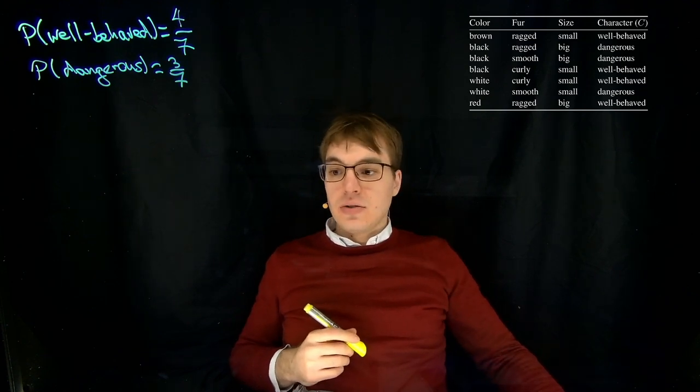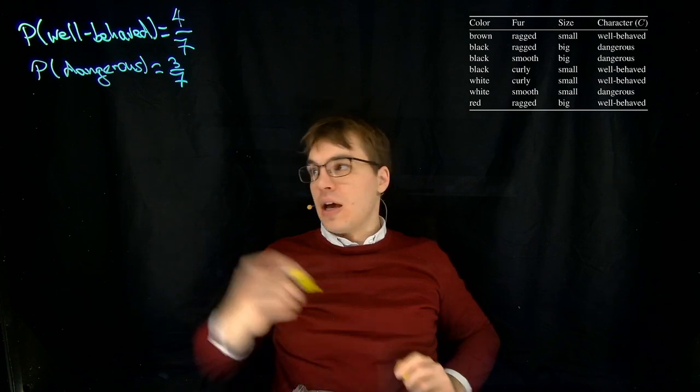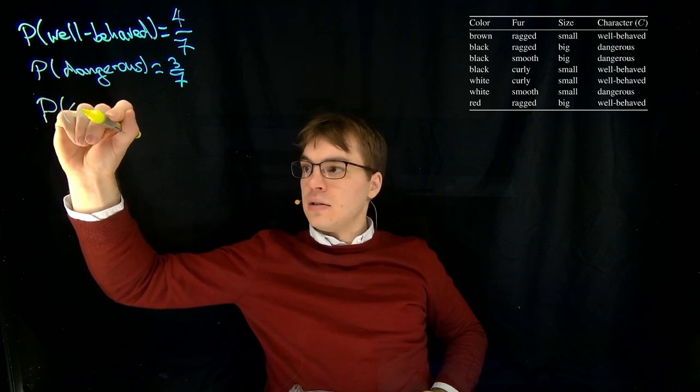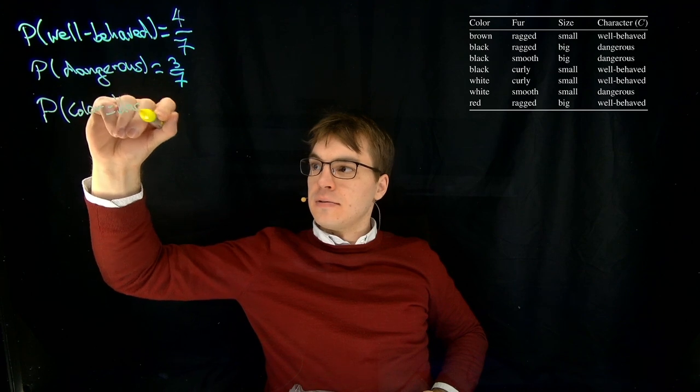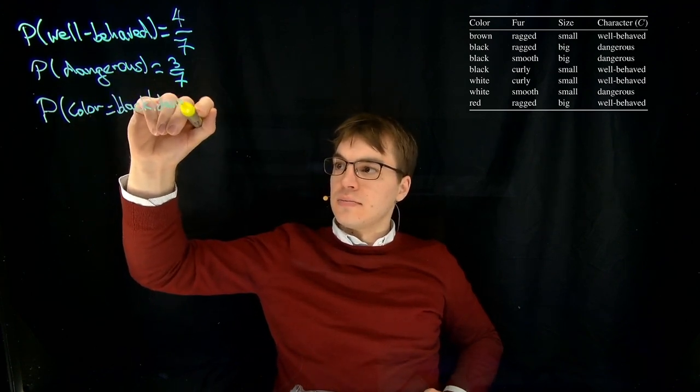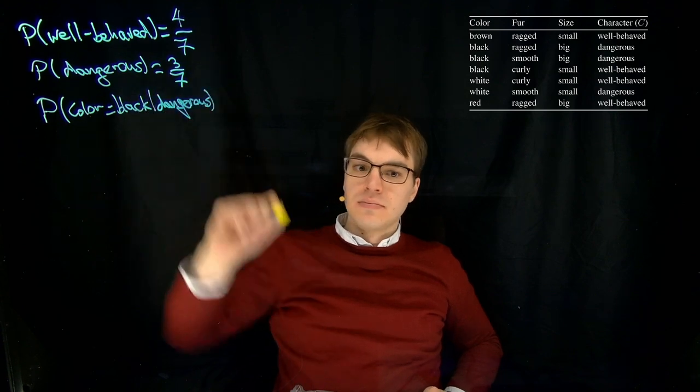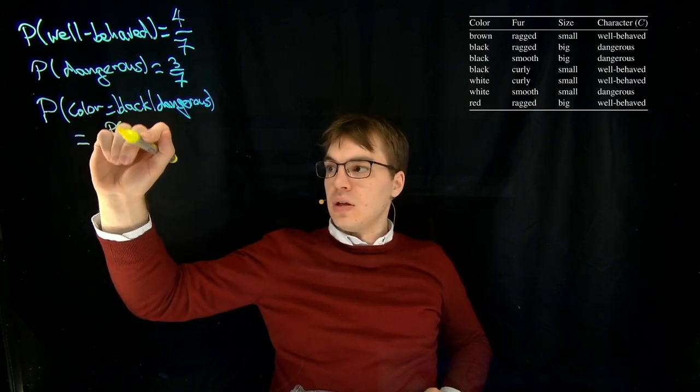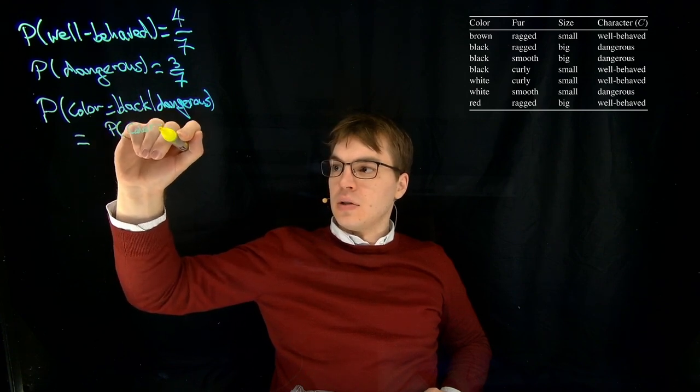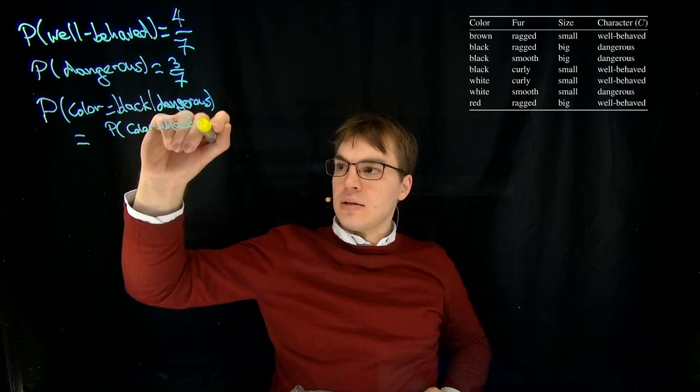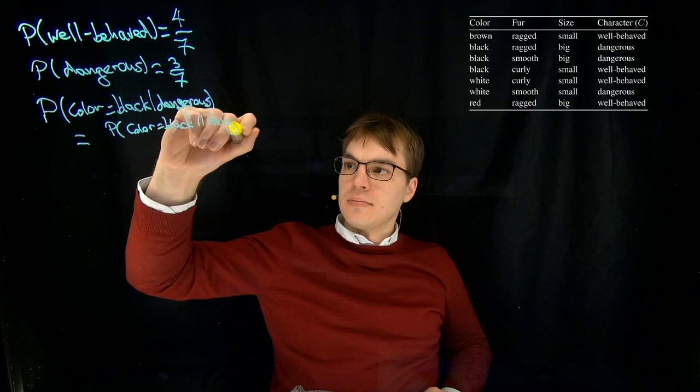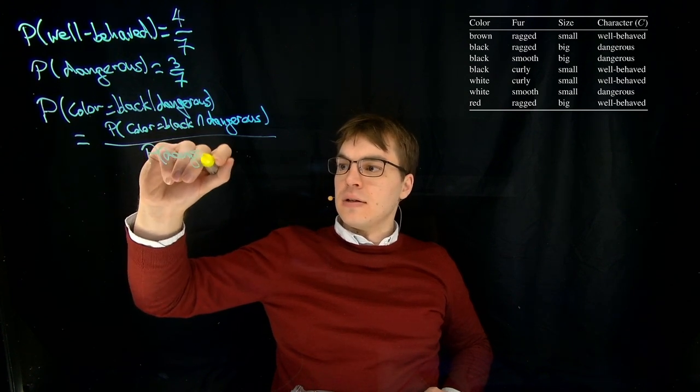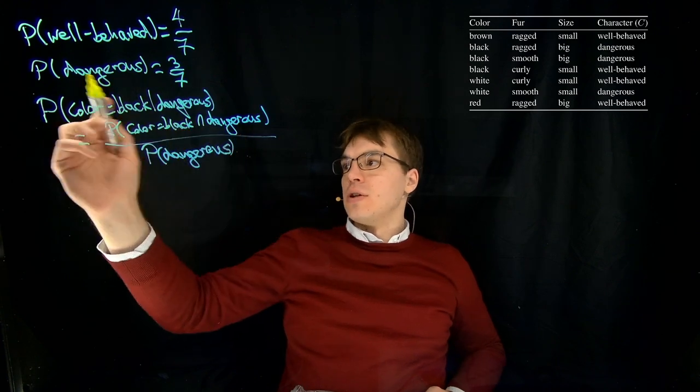The next step is to compute the attribute value probabilities. I want to give one example. The probability that the color is black, given that the dog is dangerous, is computed as the probability that the color is black and the dog is dangerous, divided by the probability that the dog is dangerous a priori, which is over here.